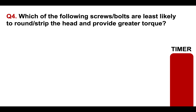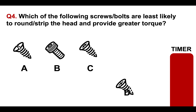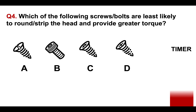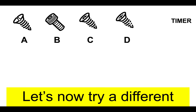Question four: which of the following screws or bolts are least likely to round or strip the head and provide greater torque? A, B, C, or D? Please put your answer in the comments section below the video. You will find that by practicing these questions under strict, difficult time conditions, it will help you during the real test.